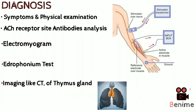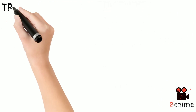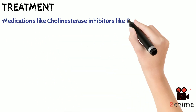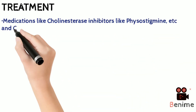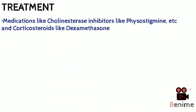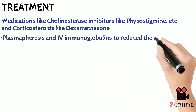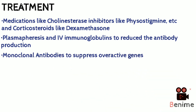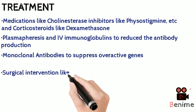Other tests include CT of the thymus gland. Treatment of myasthenia gravis is based on improving symptoms, so medications like pyridostigmine — which increases the action period of acetylcholine — and steroids are used. IV immunoglobulins and plasmapheresis are used to reduce antibody production, and nowadays some artificial antibodies are used too.